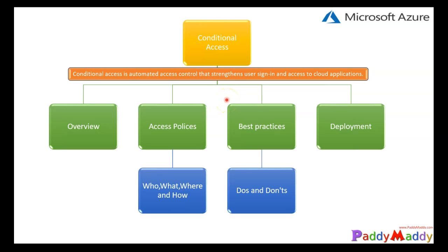Conditional access is not your first line of defense for scenarios like DDoS or denial of service attacks. However, the information gathered from the sign-in — such as risk of the login, location, and other criteria you set for multi-factor authentication — can be pulled from the logs. You can use that information to create further hardening of your environment and set access policies for your applications based on conditions.